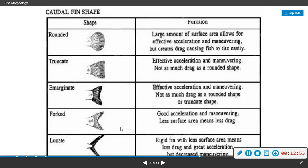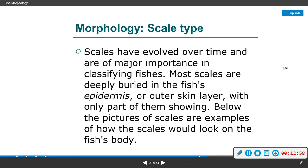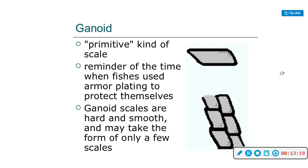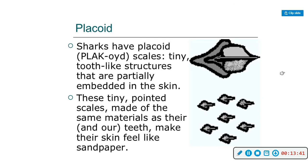Scale types are of major importance in classifying fishes. Most scales are deeply buried in the fish's epidermis with only part of them showing. Ganoid scales are a primitive type, reminiscent of when fishes used armor plating. They are hard and smooth and may take the form of only a few scales. Placoid scales are found on sharks — they are tiny tooth-like structures embedded in the skin made of the same material as teeth, which makes shark skin feel like sandpaper.